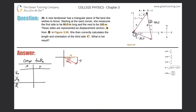For the x component: we know the hypotenuse, we know this angle, and the x side is adjacent to that angle, so we use cosine. Cosine of theta equals adjacent over hypotenuse, so cosine of 21 equals x over 80. Taking cosine of 21 multiplied by 80, we get 75 meters. That's the x value.